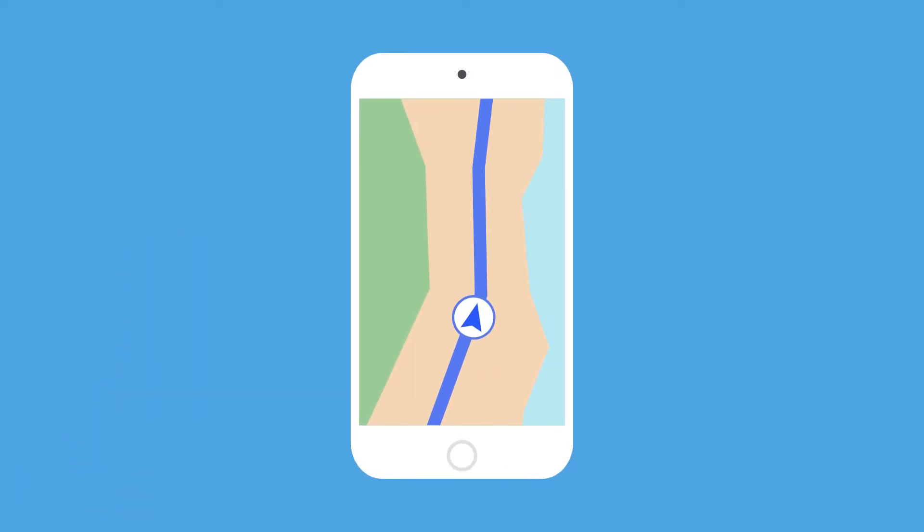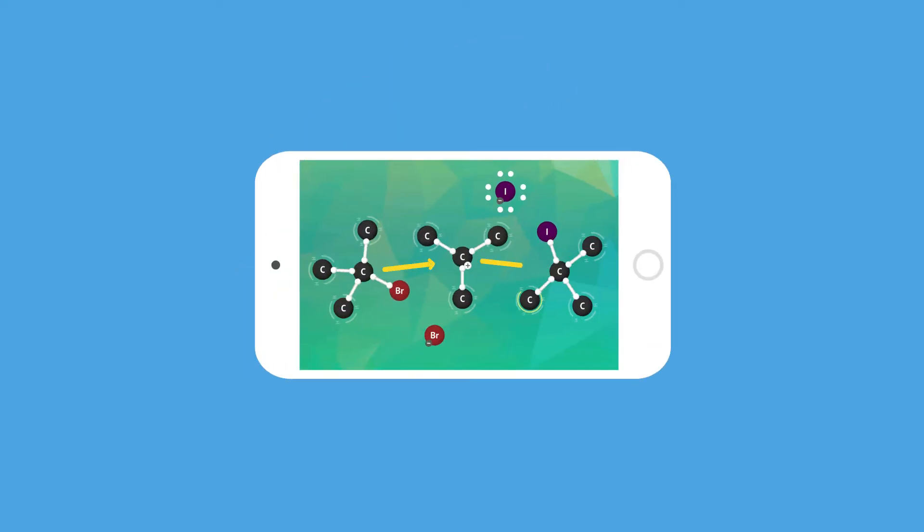Like how a map app on your phone can determine what is the most efficient route based on many factors like traffic, speed limits, and distance, mechanisms in organic chemistry map out how starting materials are transformed into products.